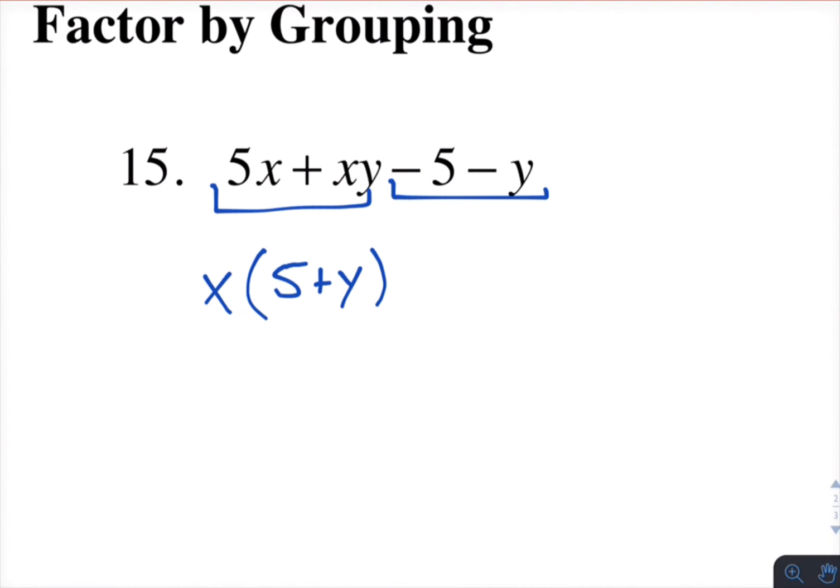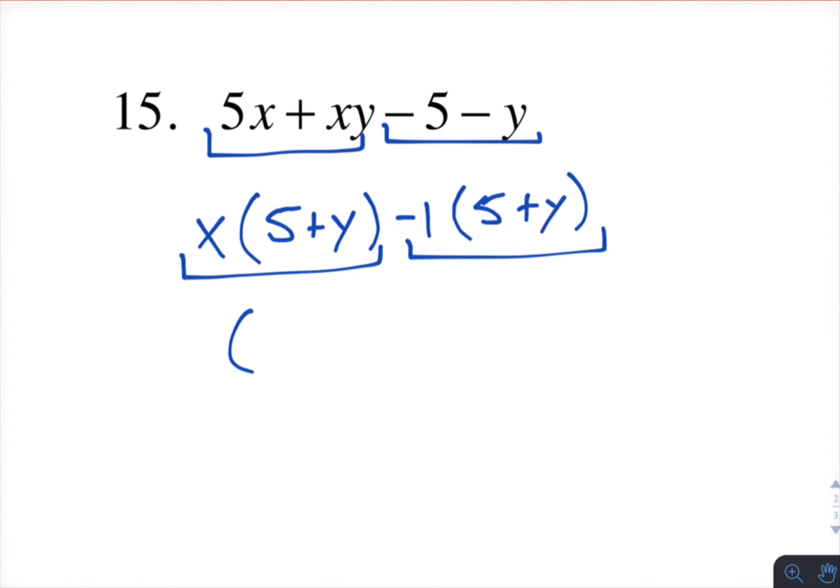Look at the next two. Notice that if you factor out a negative 1, you end up with 5 plus y. So now my four-term polynomial has become a binomial. Two terms. One term. Two terms. And those two terms have a 5 plus y in common. So we factor that out. And then we're left with x minus 1.